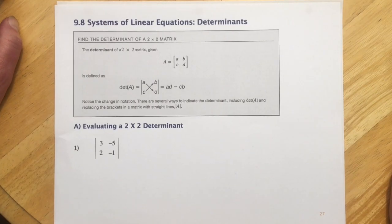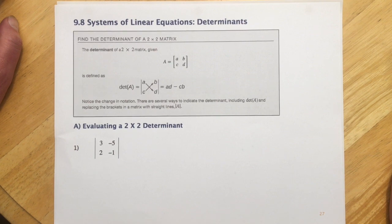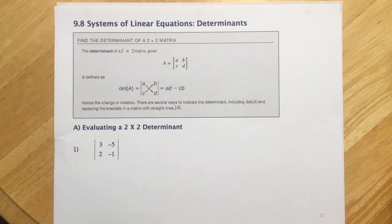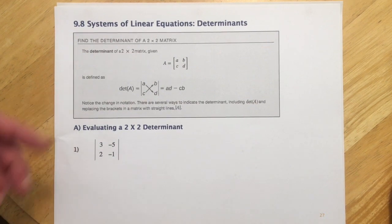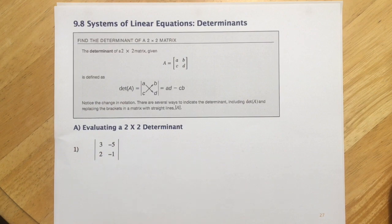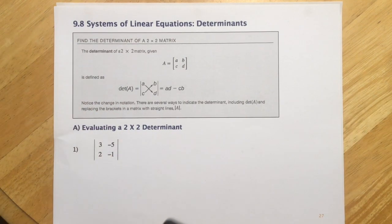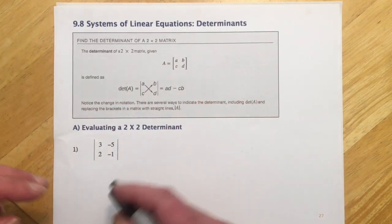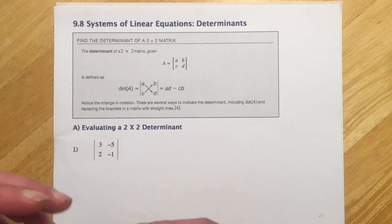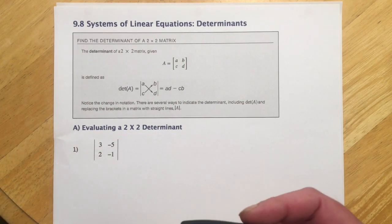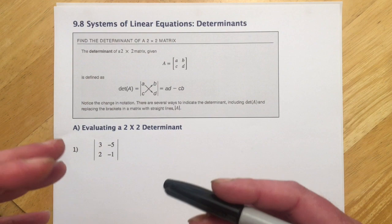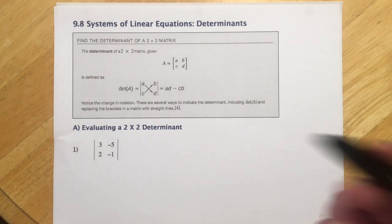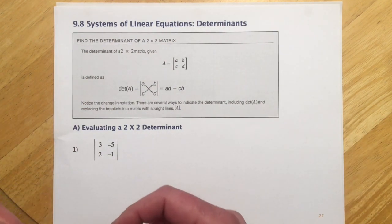Hey guys, so this video is about systems of linear equations for the third time. This time we're going to use determinants and something called Cramer's Rule for solving systems of equations. This is like the zero creativity method — you just set up a determinant, grind out a bunch of arithmetic, and it spits out the answers. It's kind of hell on earth because of sign errors, but some people really like this method, and it's really good for programming.